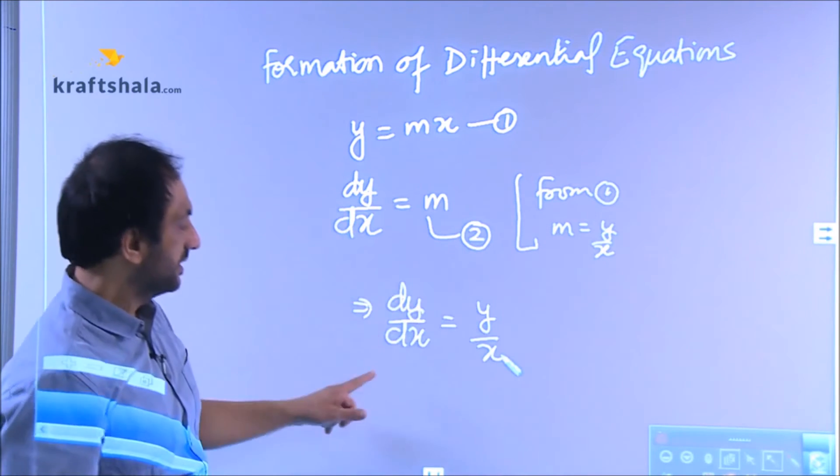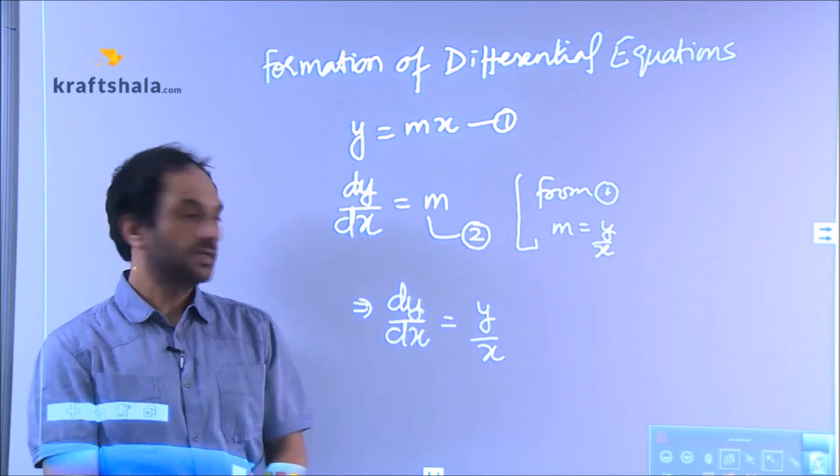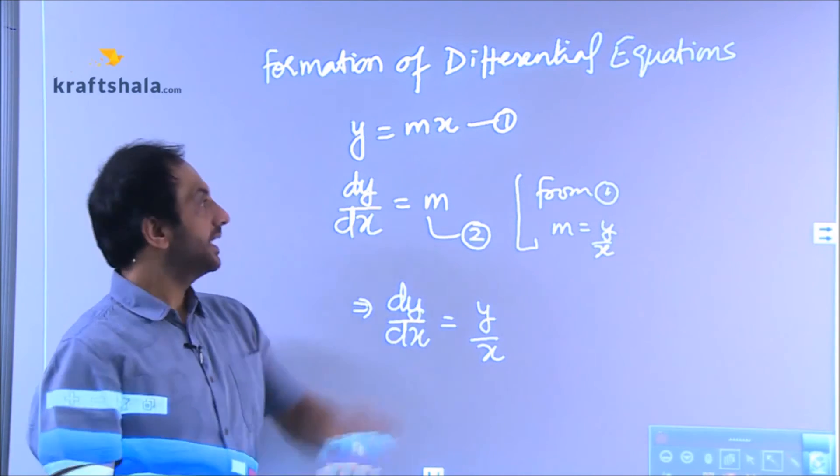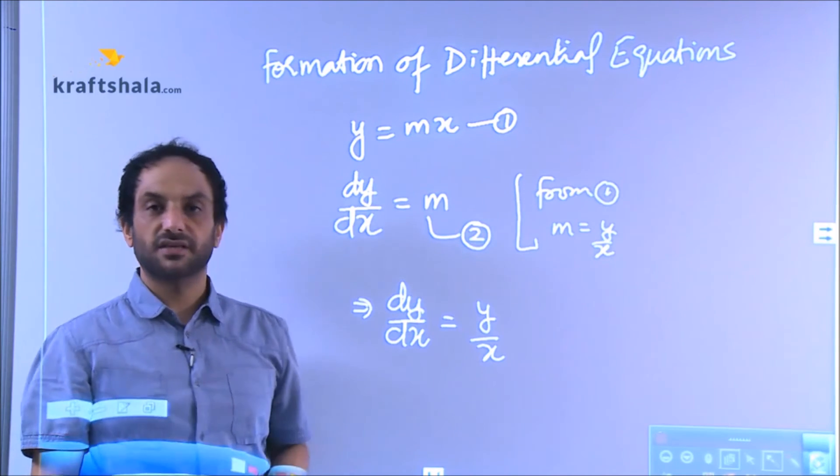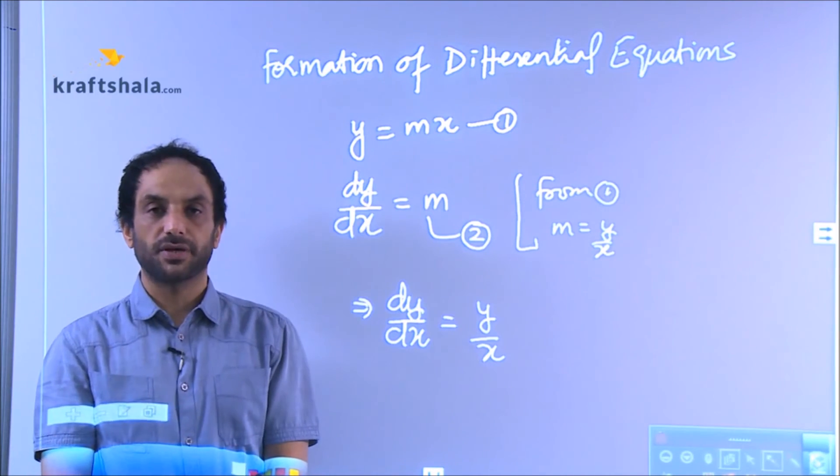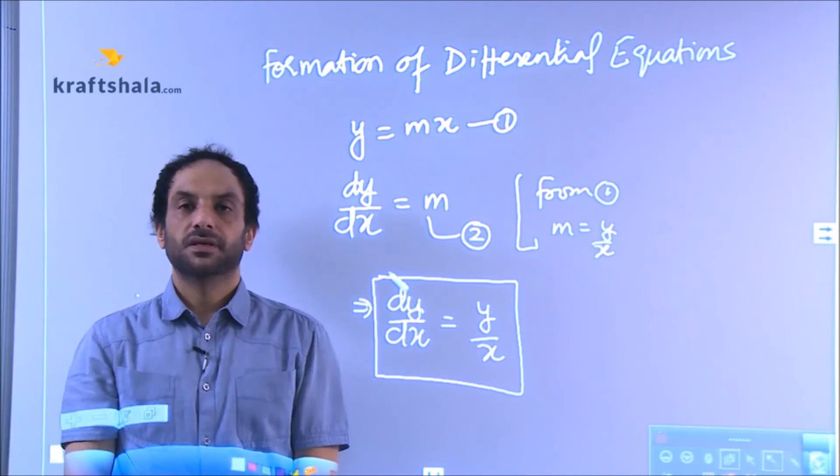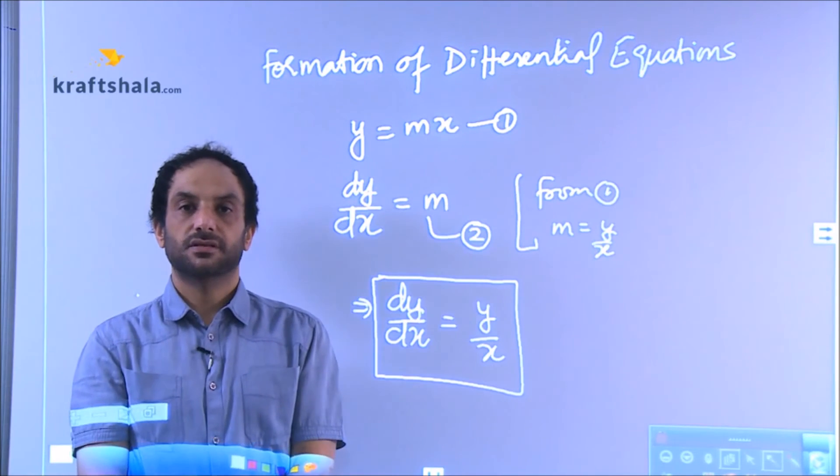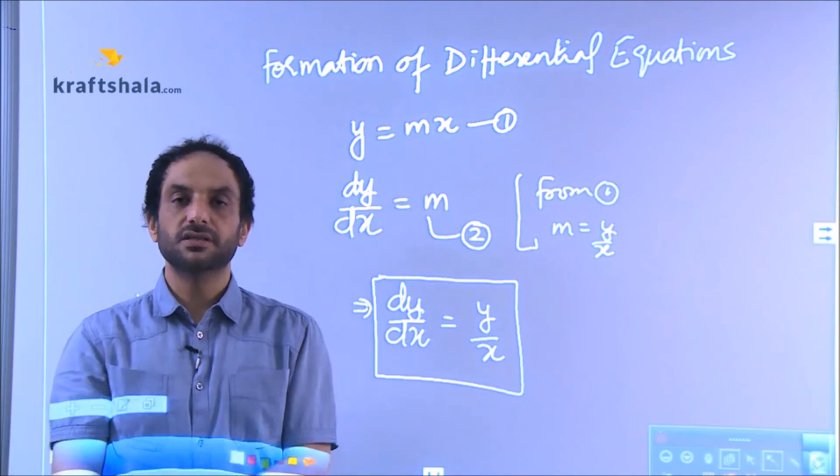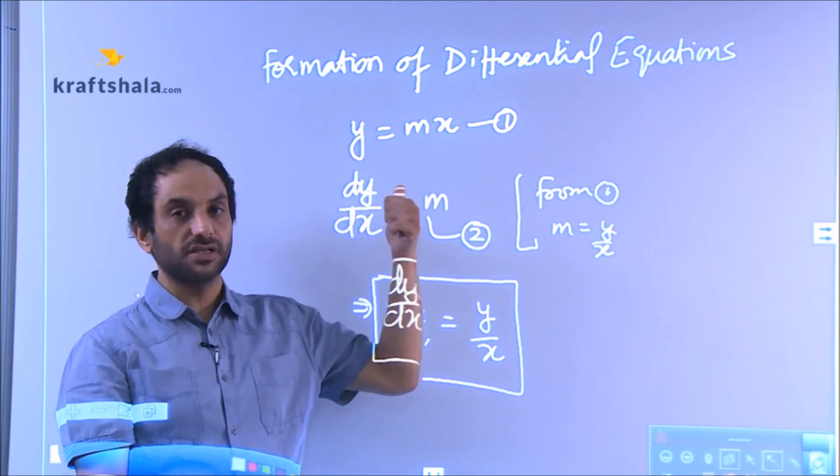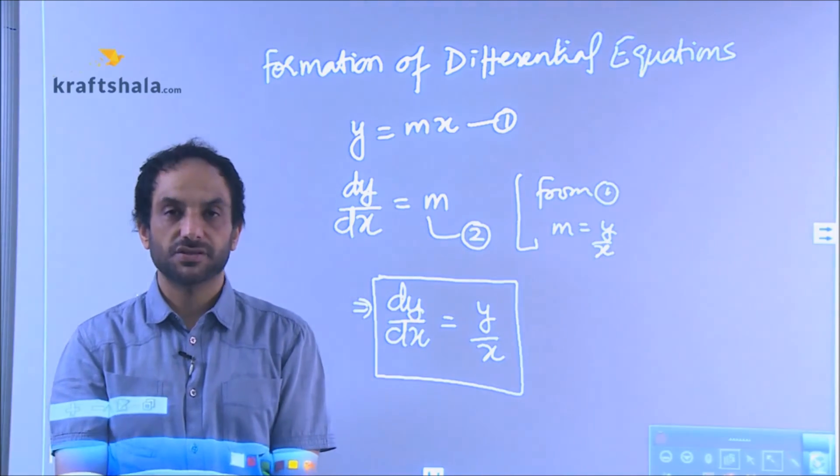Can you see that this equation is now containing dy by dx, dependent variable, independent variable, and now it is free from arbitrary constant. So we can say that we have formed the differential equation. So this is the differential equation. So any equation containing derivatives, dependent or independent variables, but does not contain the arbitrary constants of the original equation, then that equation becomes the differential equation.